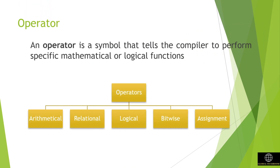An operator is a symbol that tells the compiler to perform specific mathematical or logical functions. Operators are mainly classified into: Arithmetic operators, Relational operators, Logical operators, Bitwise operators, Assignment operators, Conditional operators, and Special operators.